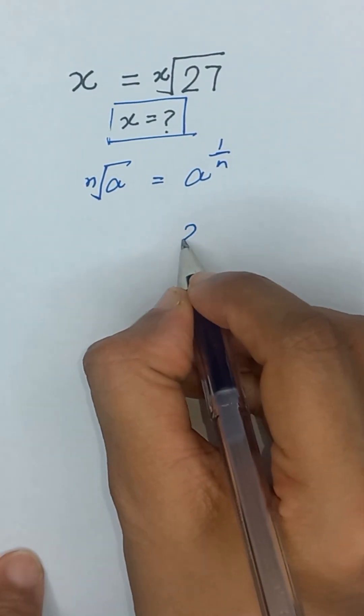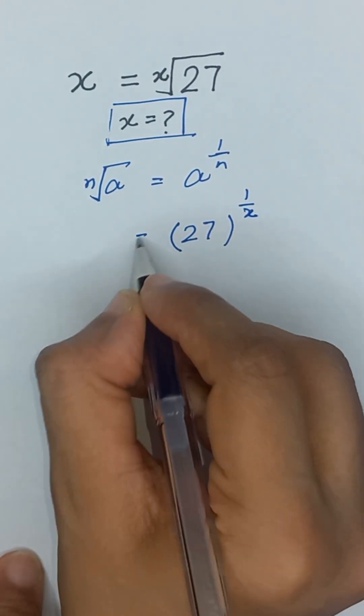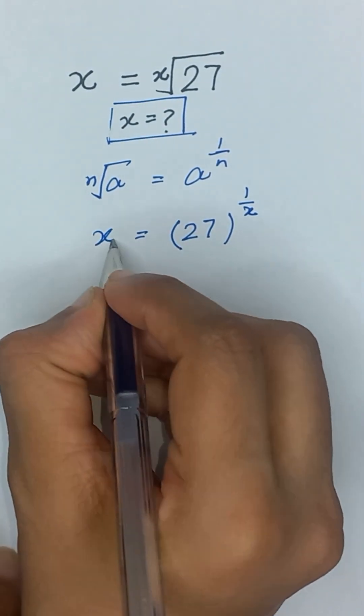So it will become 27 to the power 1 divided by x. And this side is equal to x.